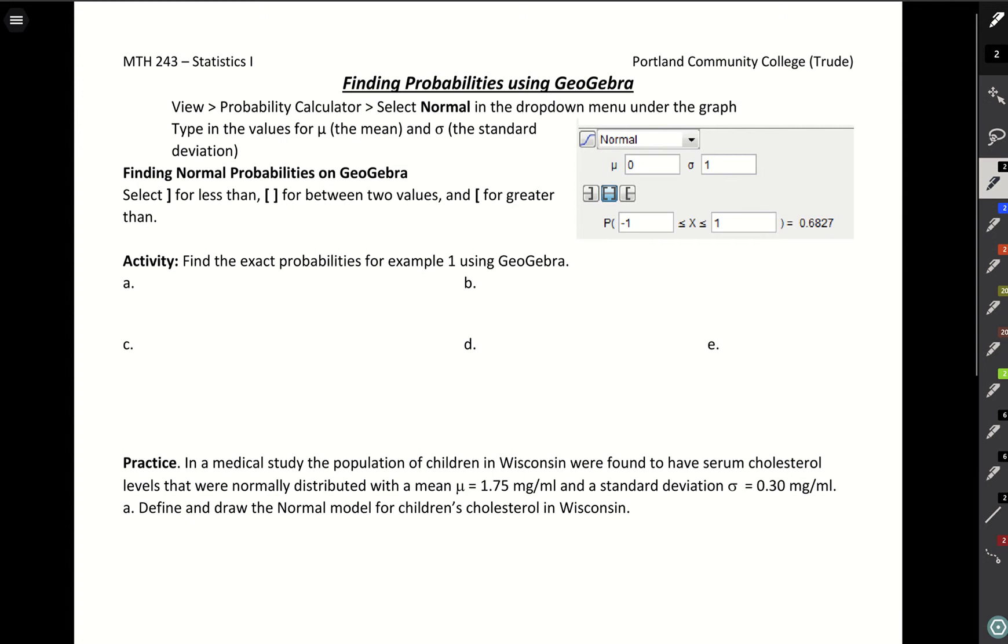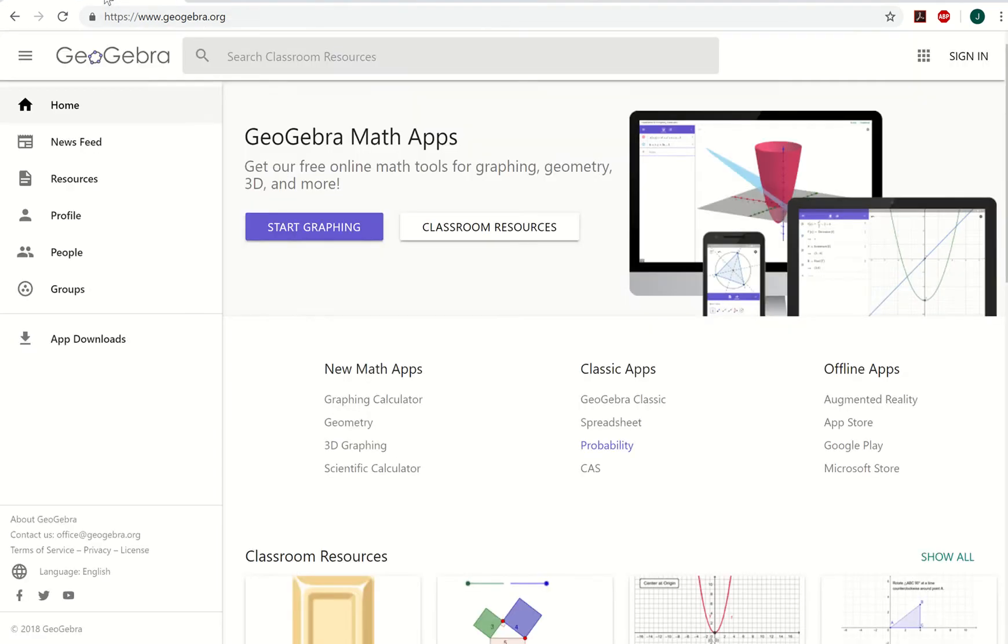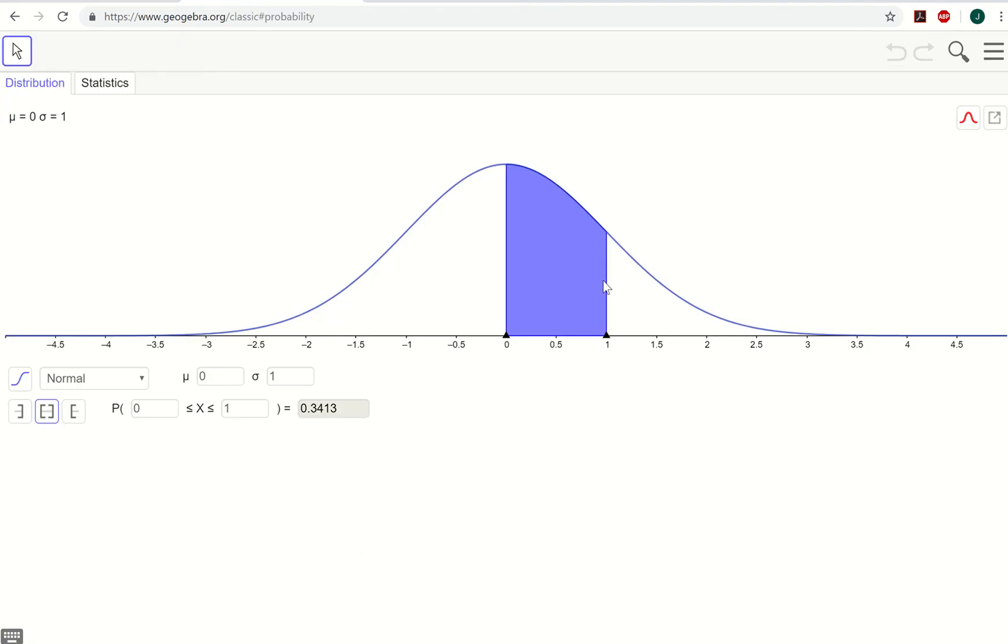When you're on the main page of GeoGebra, you'll want to click probability down here, and probability is going to take you directly to our bell-shaped curve. There's a drop-down menu where you could find different types of curves. There's our binomial that we'll use, but it starts on normal, which is what we want to use.